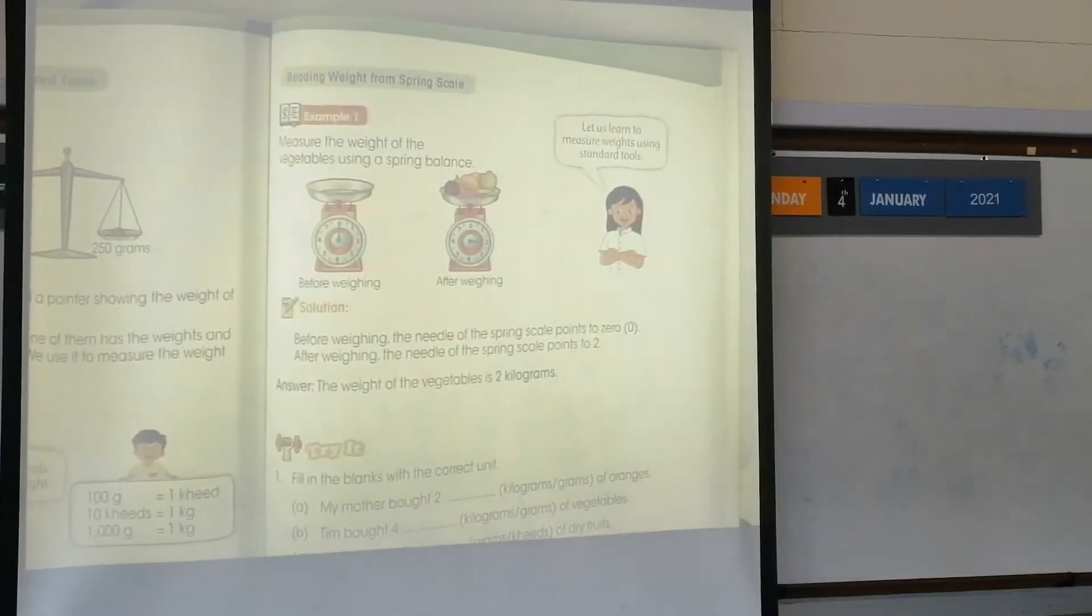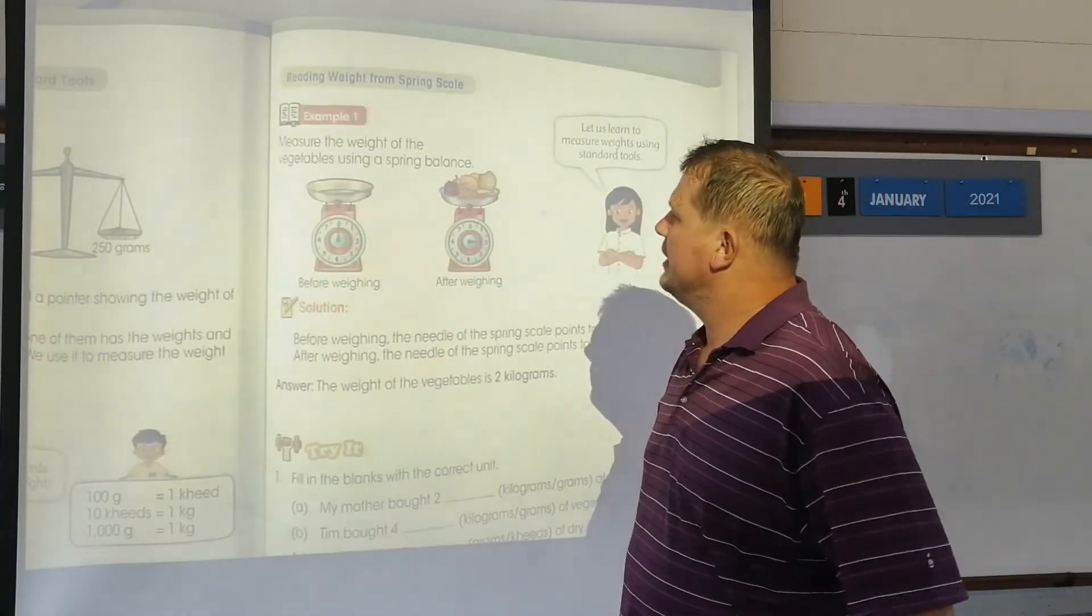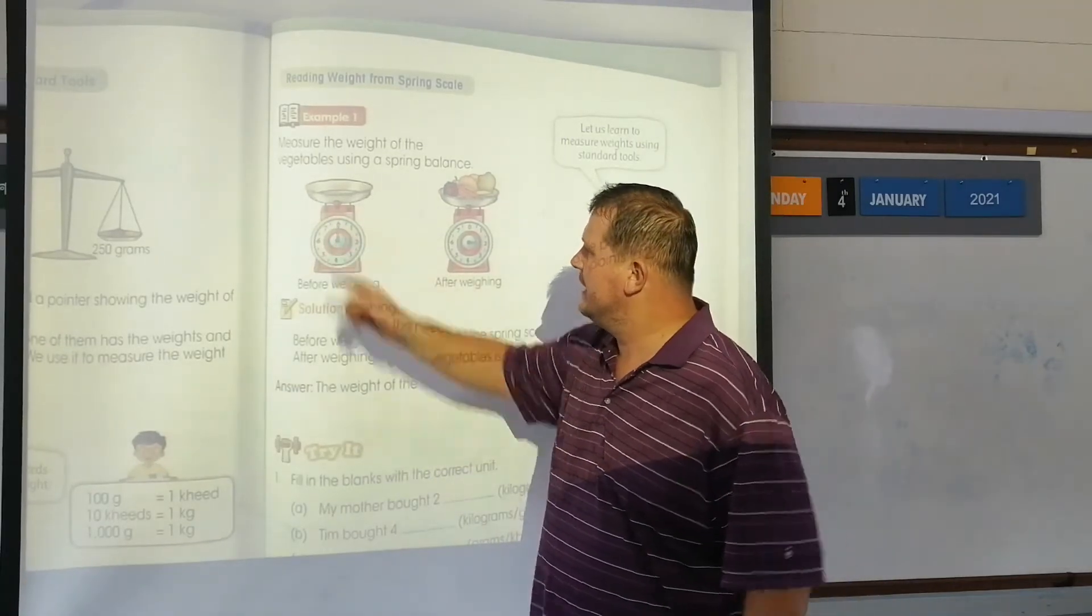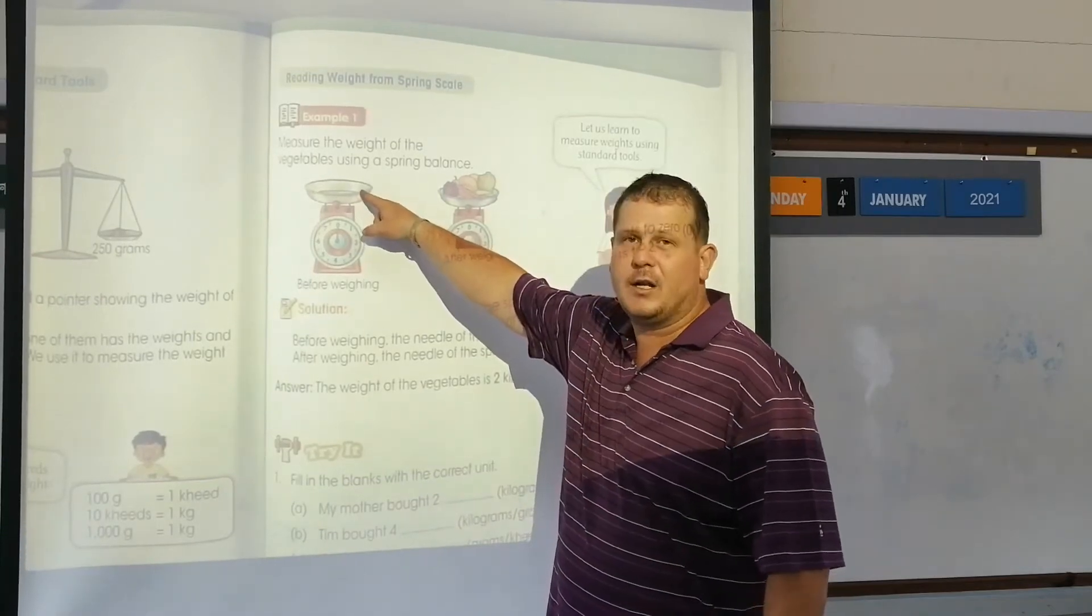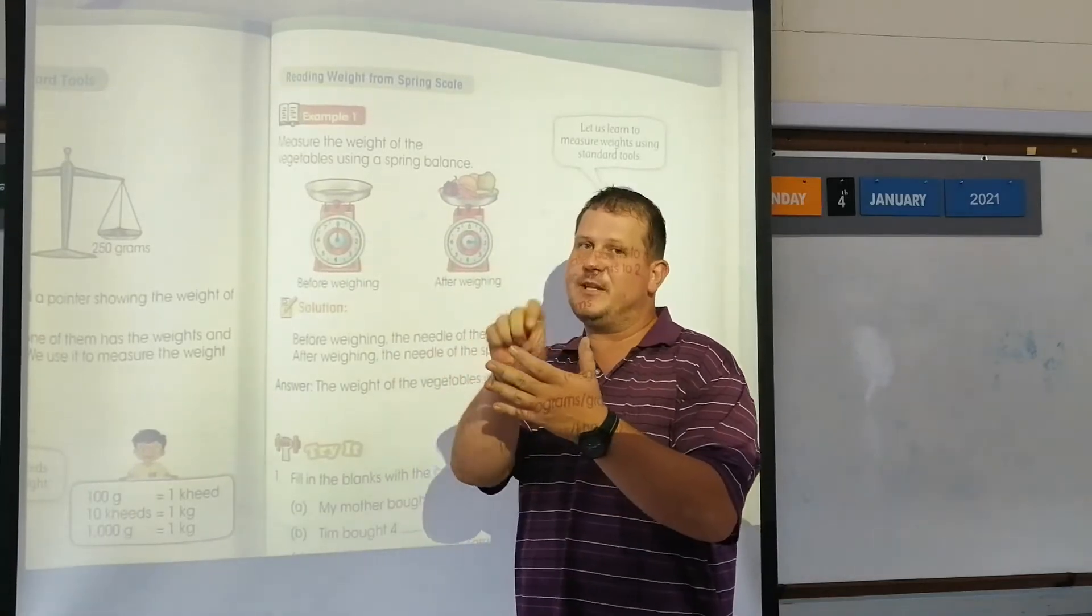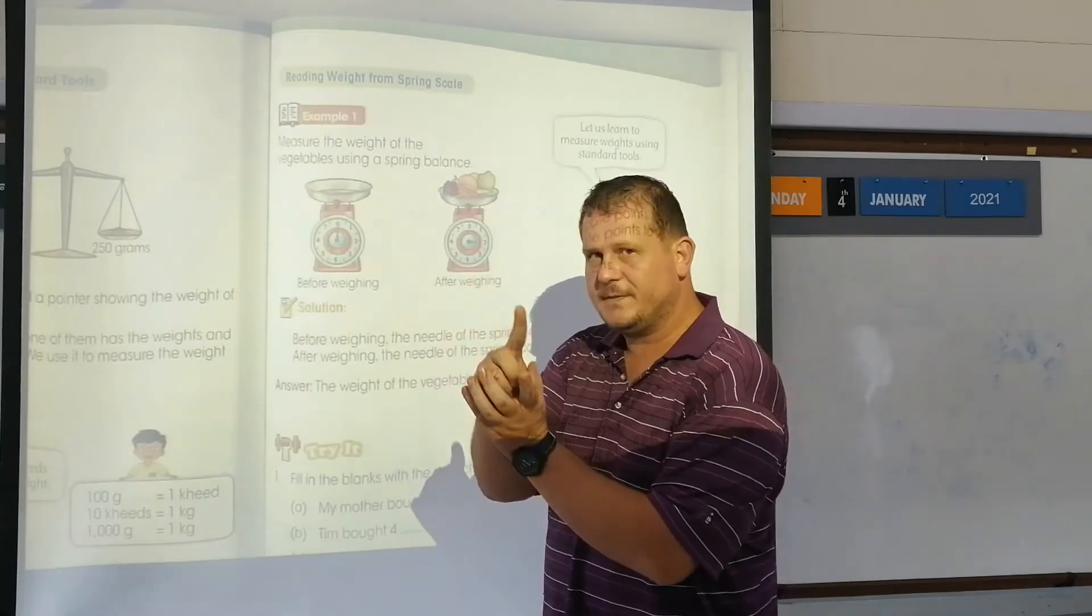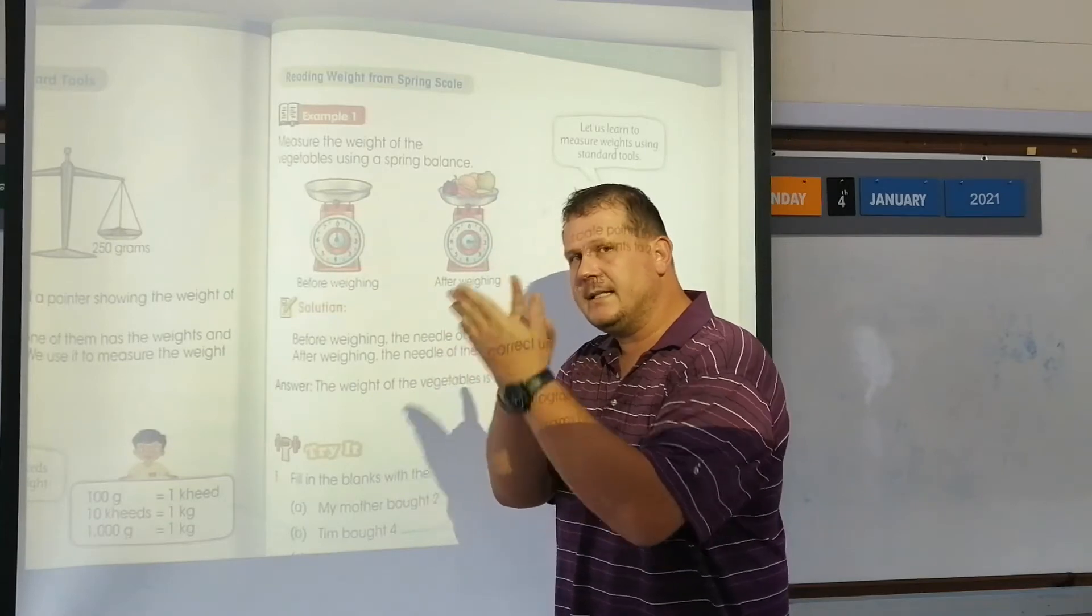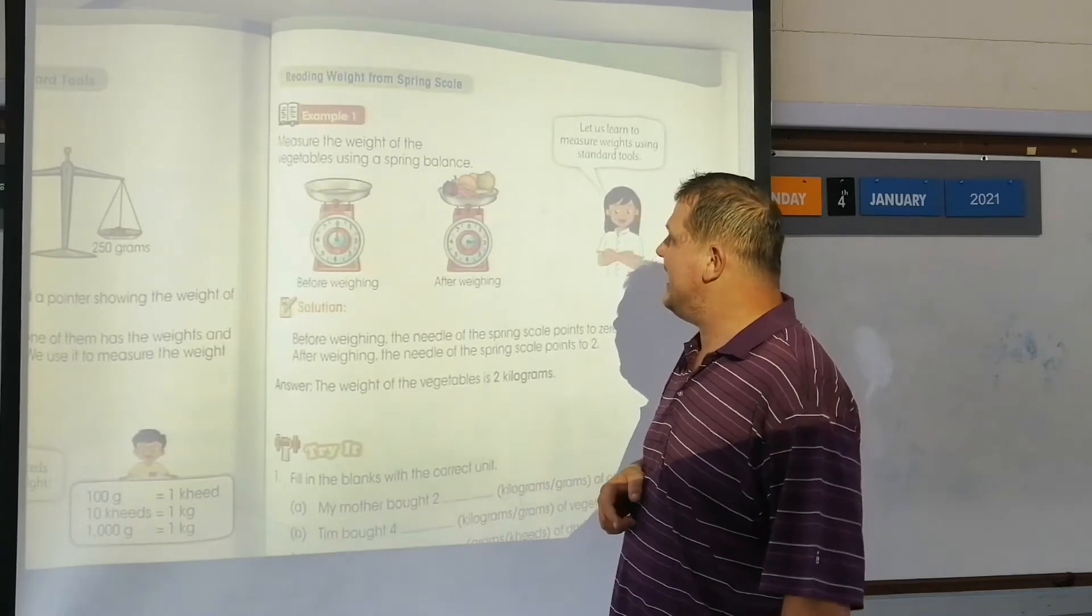Reading weight from a screen scale. Before you weigh anything, you must always make sure that the needle points to zero. There's always something, so you're going to put your tray on, the tray weighs something. What you must do at the back of the scale, there's something you can turn, and as you turn it the needle will move. So then you put your tray on and you move that needle until it's on zero, and then you place whatever you want to weigh on top.